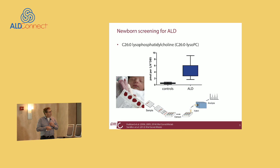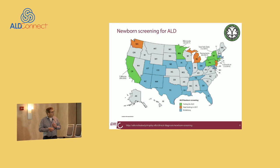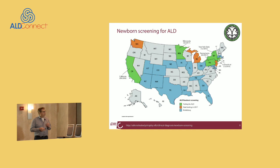Newborn screening is done in blood spots from a newborn and involves the measurement of C26-lysophosphatidylcholine, a complex lipid. This test is very sensitive — all ALD males are elevated and control ranges are clearly separate. It's a very quick test. At this moment, five states in the US are screening for ALD. It all started in New York State, then was followed by Connecticut. California started in September 2016, Minnesota in February 2017, and Pennsylvania in April 2017.